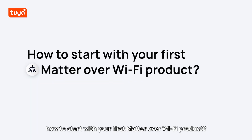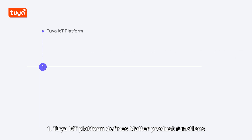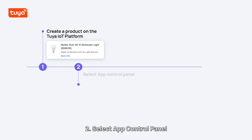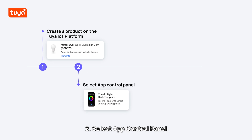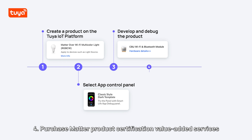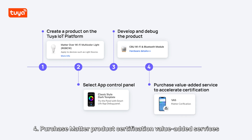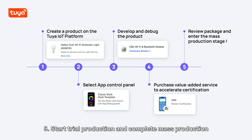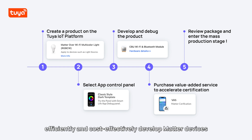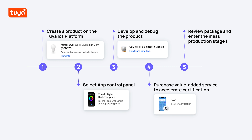How to start with your first Matter over Wi-Fi product? Step one: Tuya IoT Platform defines Matter product functions. Step two: select app control panel. Step three: hardware development and functional self-testing. Step four: purchase Matter product certification value-added services. Step five: start trial production and complete mass production. Just five steps to quickly, efficiently, and cost-effectively develop Matter devices.